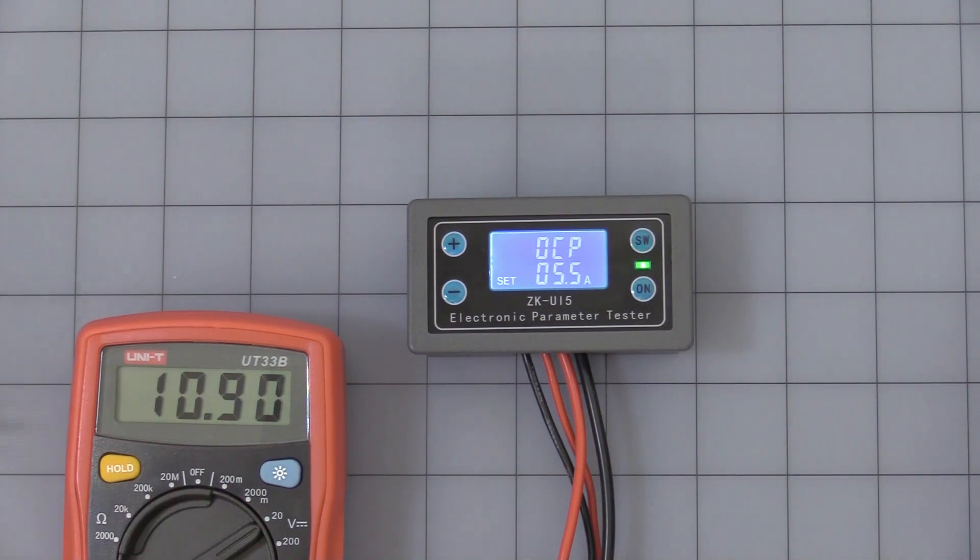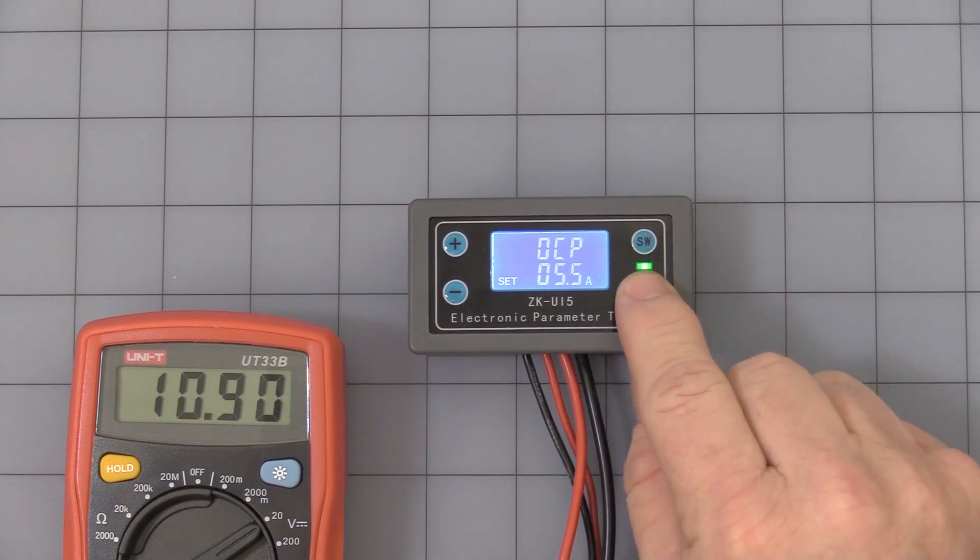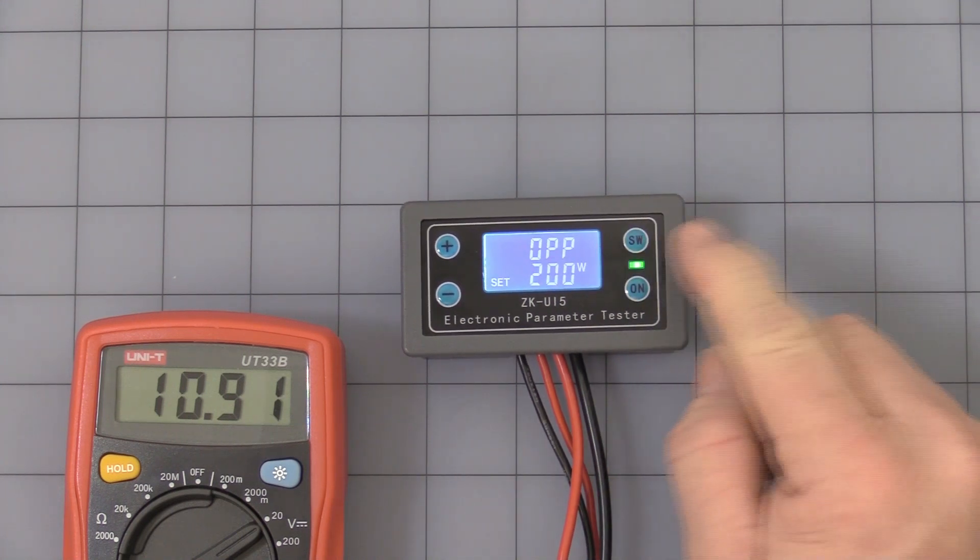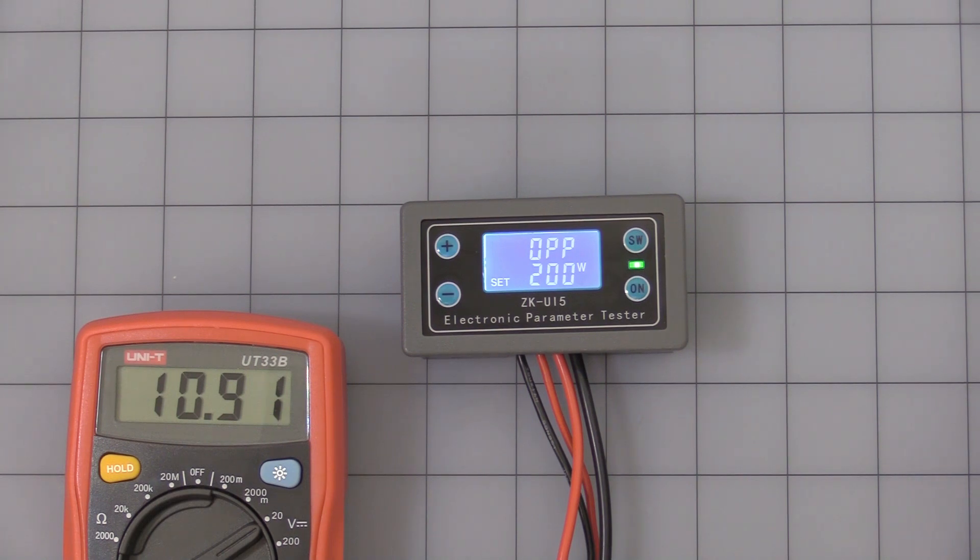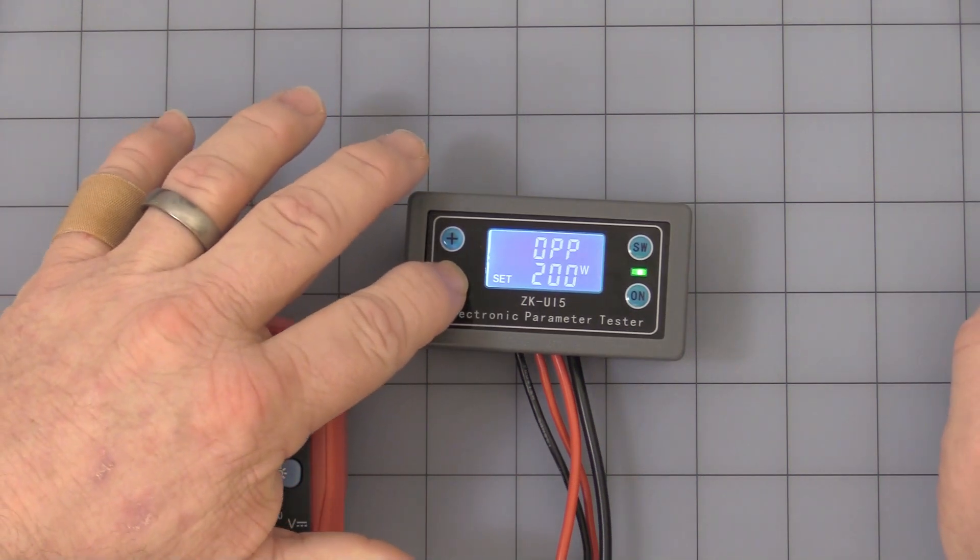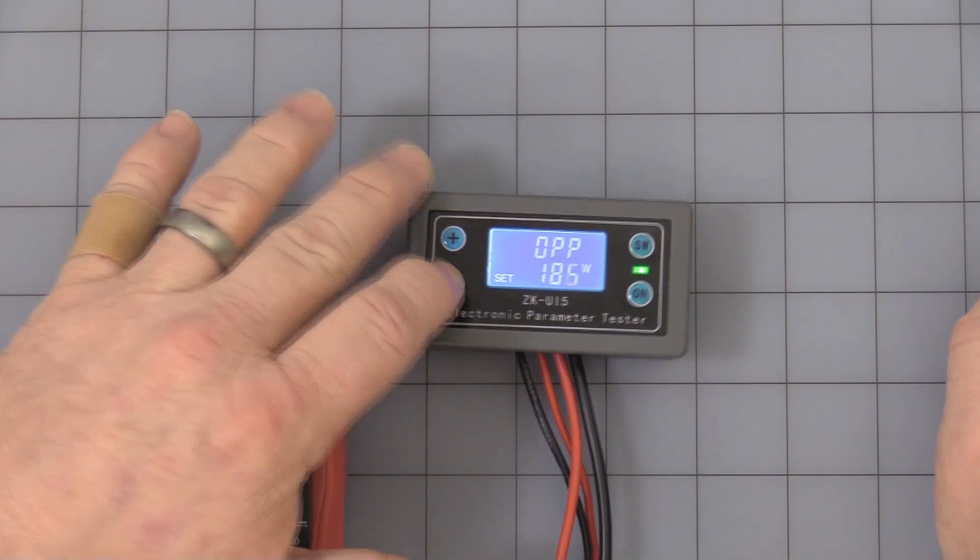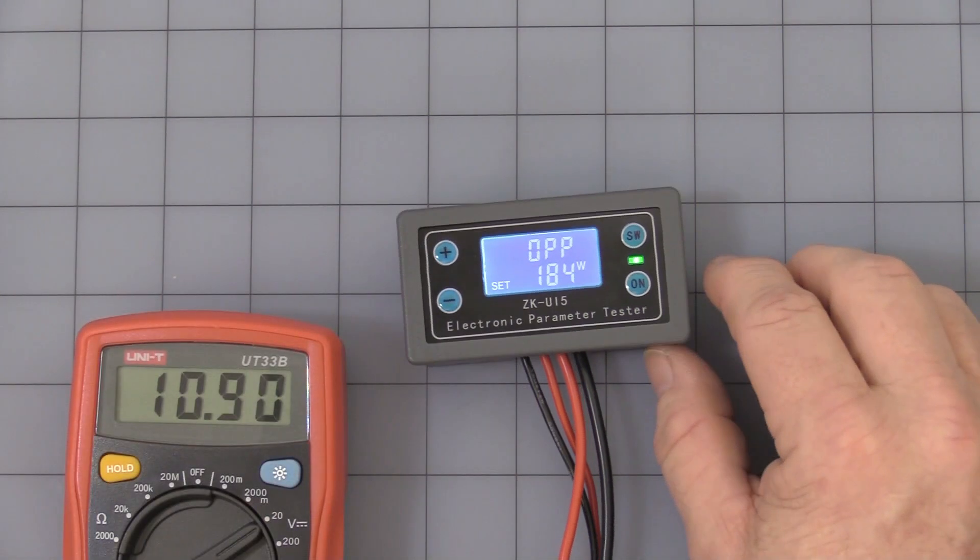It comes factory set at 5.5 amps. So you can change it with the plus and minus buttons. There's no need to set that. Press it again. This is over power protection. It comes factory set at 200 watts. You can press minus and set at whatever watt rating you want.